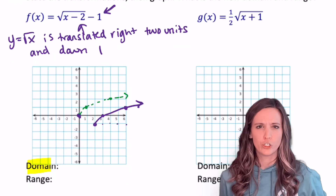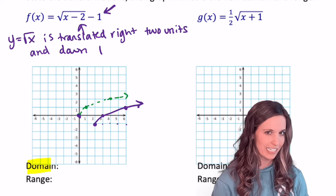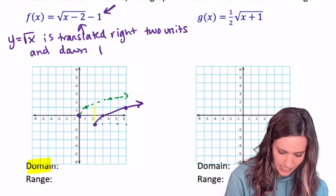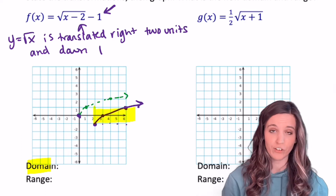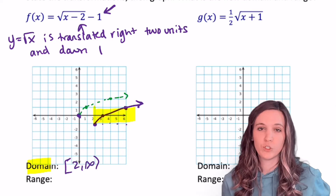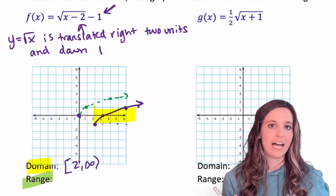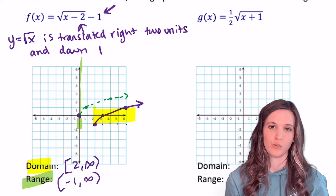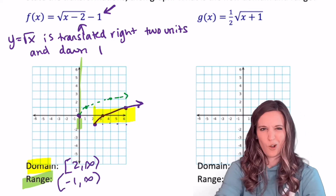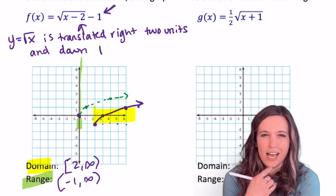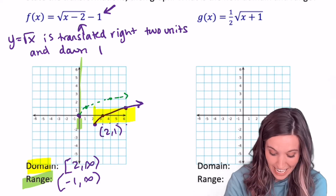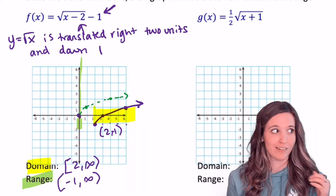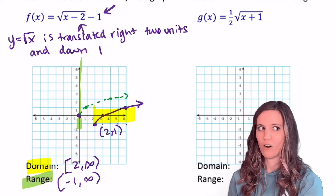How does the transformation affect domain and range? Walking across the x-axis, I see the transformed graph first at x equals 2, so the domain is 2 inclusive to infinity. On the y-axis, I first see it at negative 1, so the range is negative 1 inclusive to infinity. Notice the endpoint was 2, negative 1 — matching our domain start of 2 and range start of negative 1. That's a useful shortcut to check.